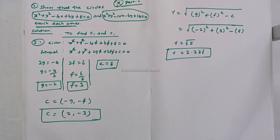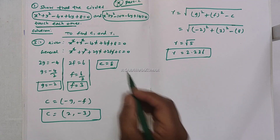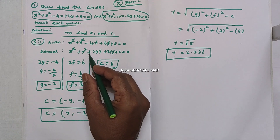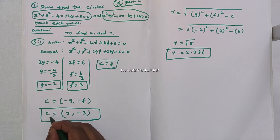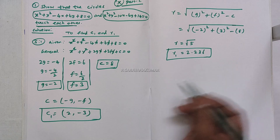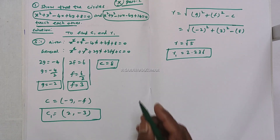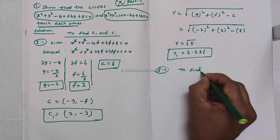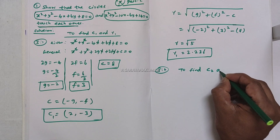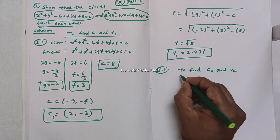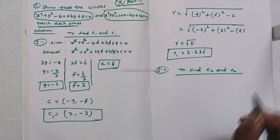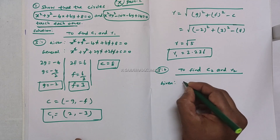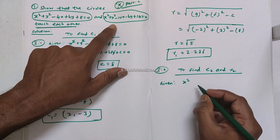Now we have the center and radius for the first circle: C1 and R1. The center is obtained by changing the sign of g and f. This completes the first step. Now we move to the second step — the second circle equation.